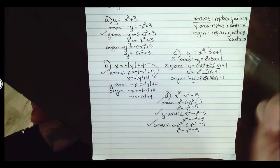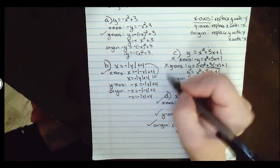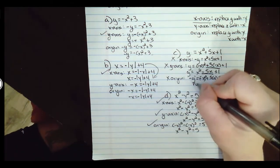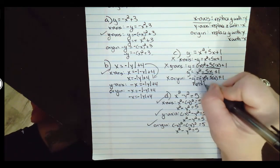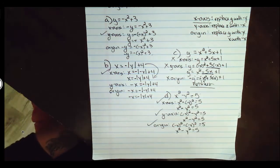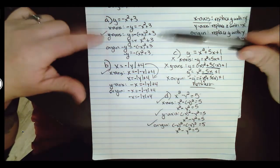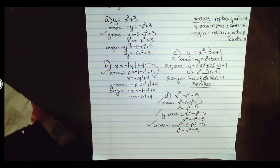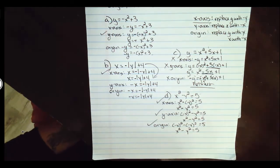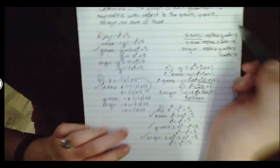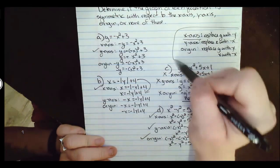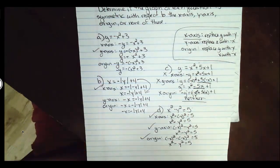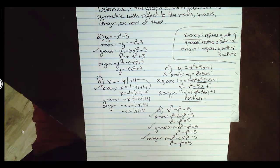To summarize: for example C, none of the symmetries worked, so it was a neither case. For example A, it was y-axis symmetry. For B, it was x-axis symmetry. For C, it was neither. And for D, all three worked. All you have to do is remember the rules for symmetry and apply them — that's how you check them. That's it for this video.